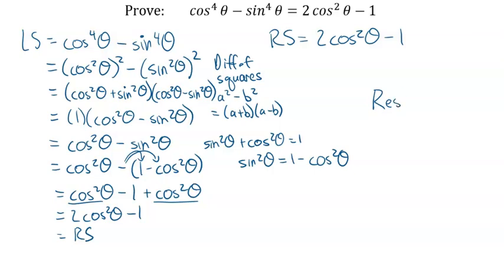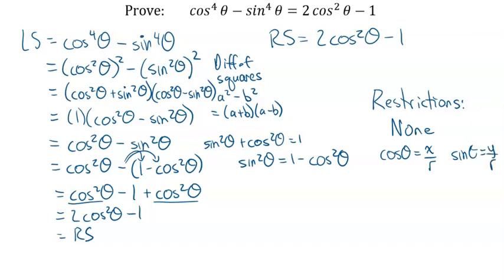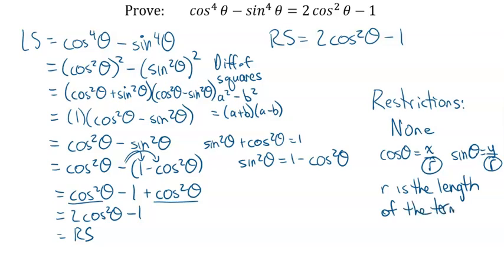Now for restrictions. In the last example, tan gave us a restriction on cosine. But here we just have cosine and sine in numerators — there are going to be no restrictions. You might think cosine equals x over r and sine equals y over r, so r can't be zero. But r is the length of the terminal arm — you can never have a terminal arm of length zero, so this is never a restriction. Therefore, there are no restrictions for this example.